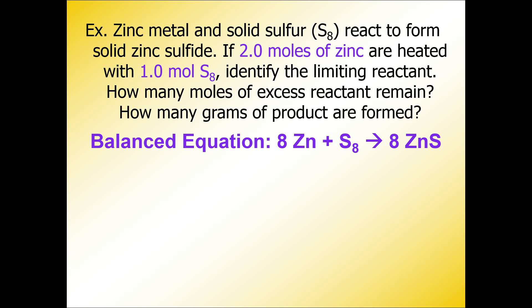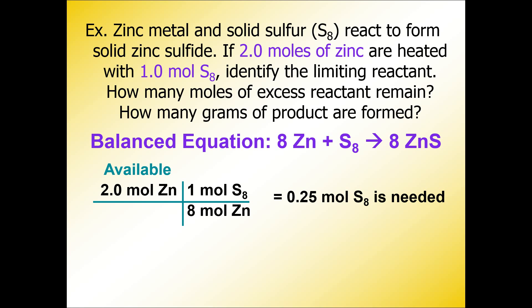This is how you would do that calculation. Start off with one of these values - it doesn't matter which one, but I usually pick the first one. So there is our starting point: 2.0 moles of zinc. The next step is to do a mole ratio between the two reactants. I'm going to compare eight moles of zinc to one mole of sulfur. When you complete that calculation, you've just calculated how much sulfur is needed if you start with two moles of zinc.